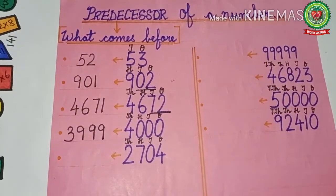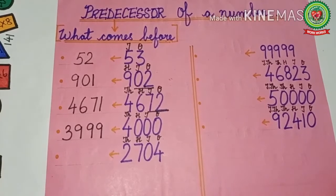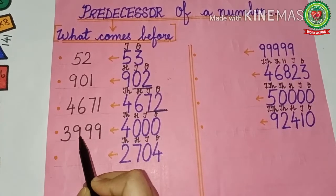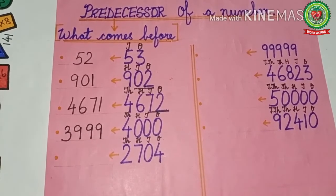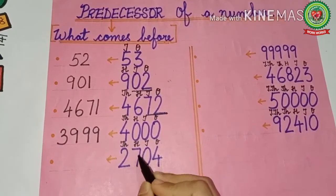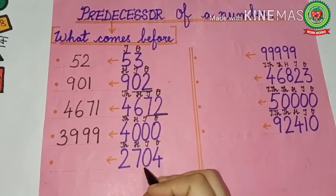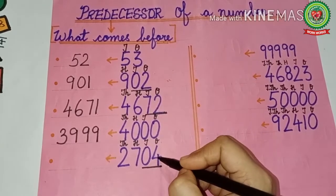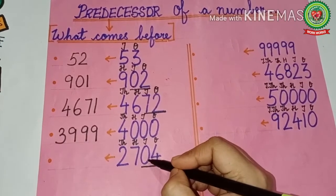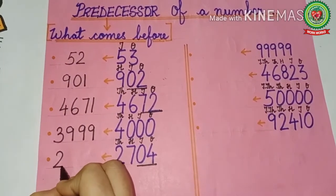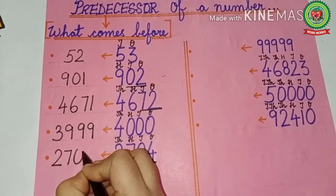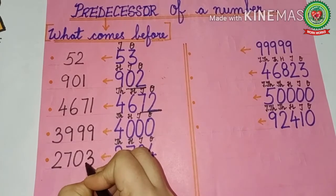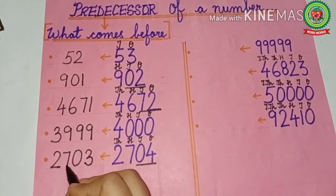Kids, you should know the counting very well. You should know that before 4000 comes 3999. Next number is 2704. Now 04 is there, so we have to change the place of 4. We have to see what comes before 4, because 0 will remain the same. 2700 will remain the same. What comes before 4? That is 3. So the predecessor is 2,703.